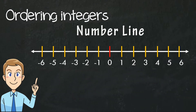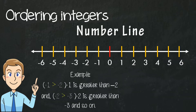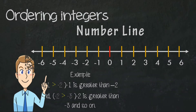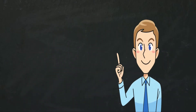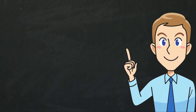For example, negative 1 is greater than negative 2, and negative 2 is greater than negative 3, and so on. Now that you know the ordering of integers, let's do some practice.